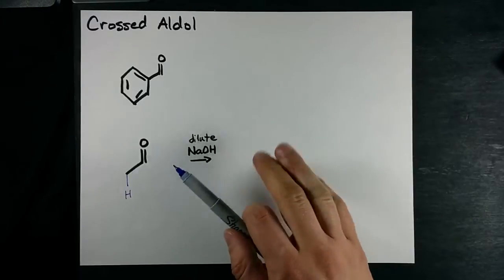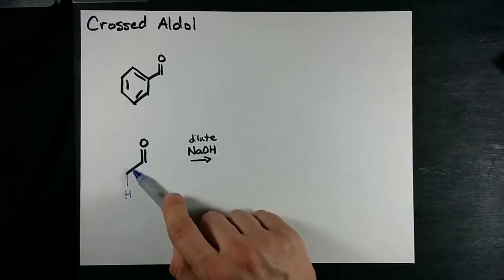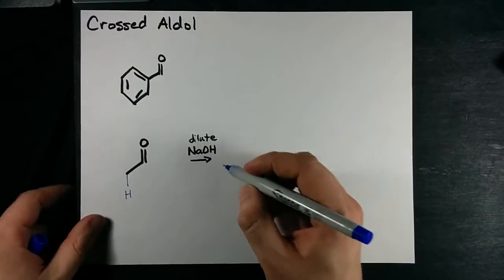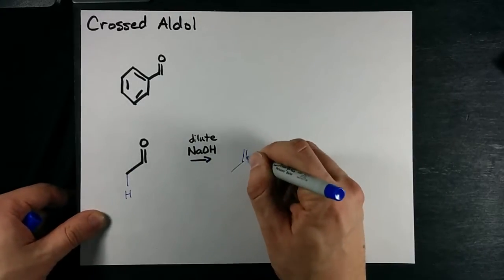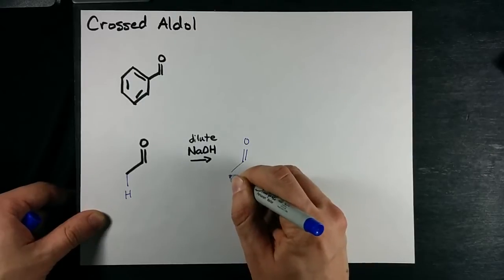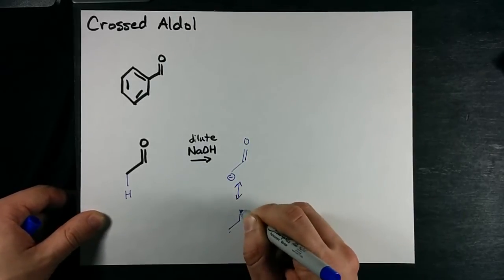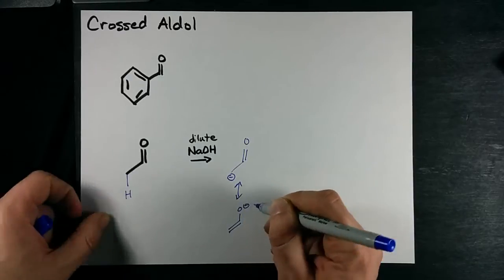Now what that means is as he is added, he's going to react. When you add him to something that has NaOH, you rip that proton off, you end up with the conjugate base. Don't forget there is a resonance structure like that.